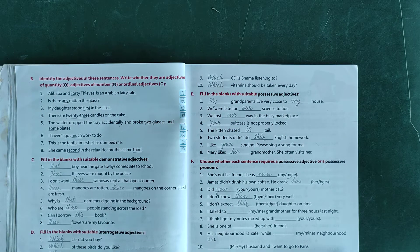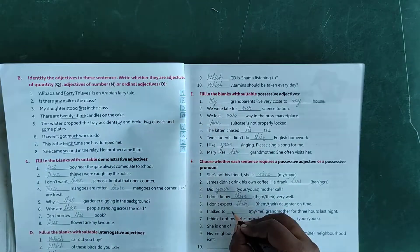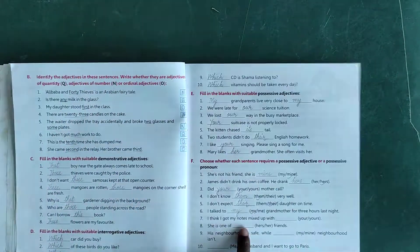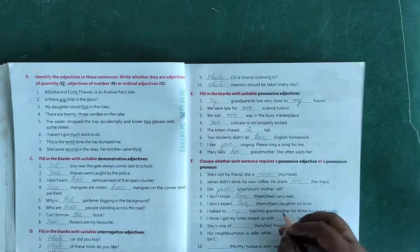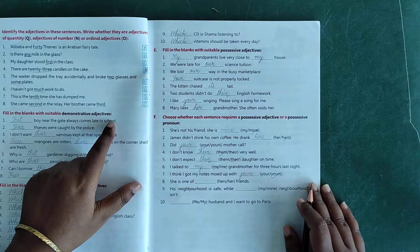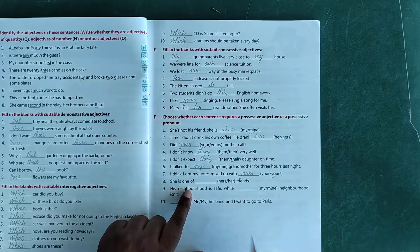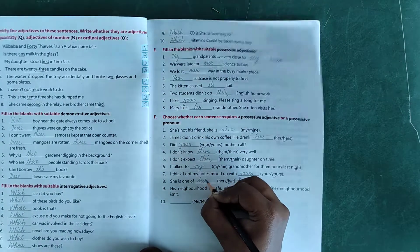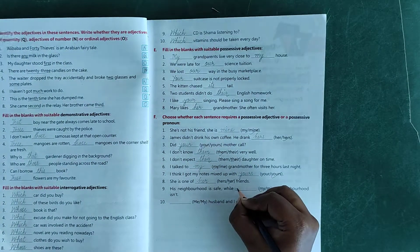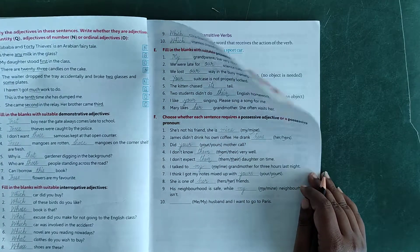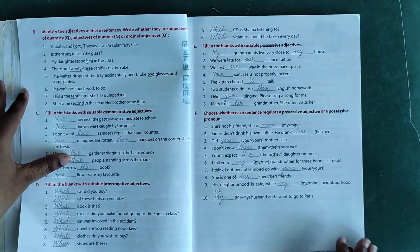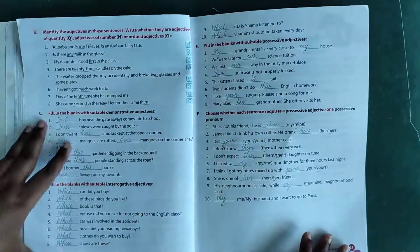Number 6: I talked to dash grandmother for 3 hours last night - my grandmother. Number 7: I think I got my notes mixed up with dash - yours, Y-O-U-R-S. Number 8: she is one of dash friends - her friends.